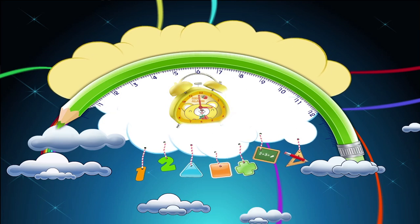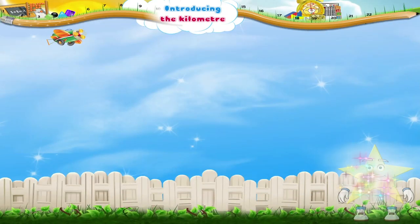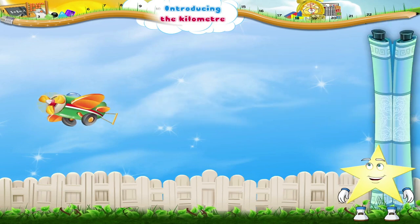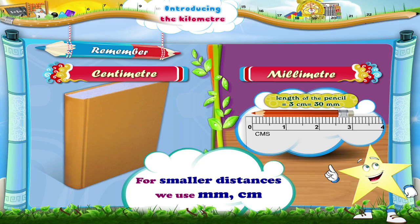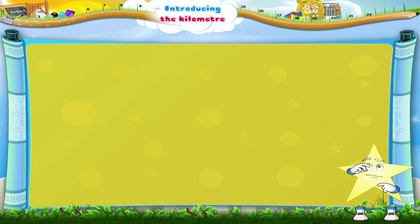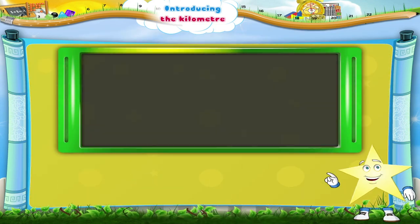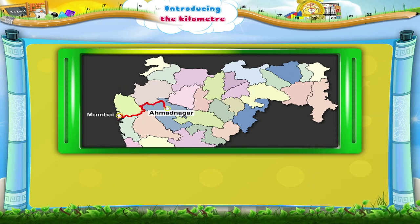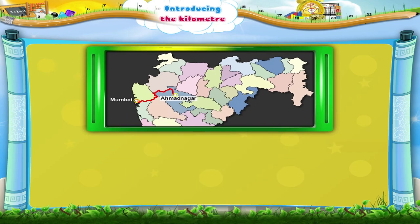Introducing the kilometre. Do you remember that we used the units centimetre and millimetre for small distances? But do you know how to measure distances that are really long? Say, the distance between your house and the school, or the distance between two cities. You must know that although a metre is a greater unit than centimetre, we cannot use the unit metre to measure such long distances. For this, we have another bigger unit — that is the kilometre.